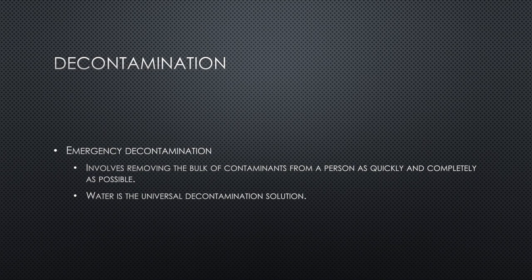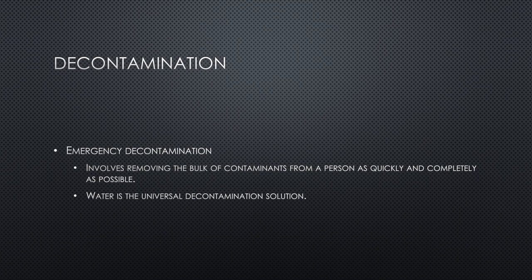In some cases, you may need to make an immediate decision to treat patients despite contamination — use appropriate PPE in those situations. Emergency decontamination is the process of removing the bulk of contaminants from a person as quickly and completely as possible. Instruct the person to disrobe and remove as much hazmat from the body as possible — remember, 80 to 90%. Give the person bags to put personal belongings and clothing into. Brush off any powder. Water from any available source is most often the universal decontamination solution — the solution to pollution is dilution.